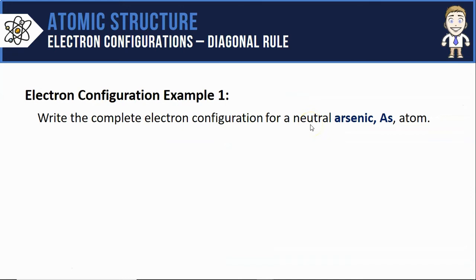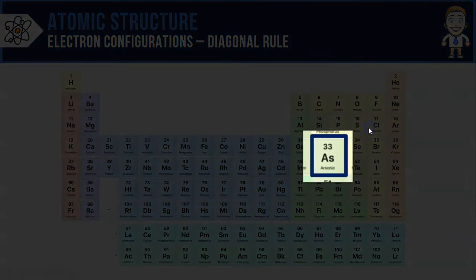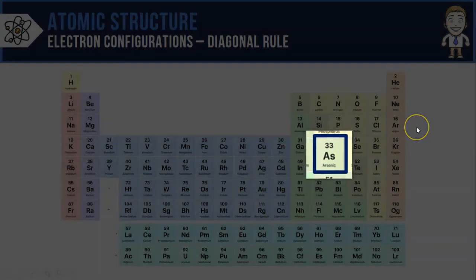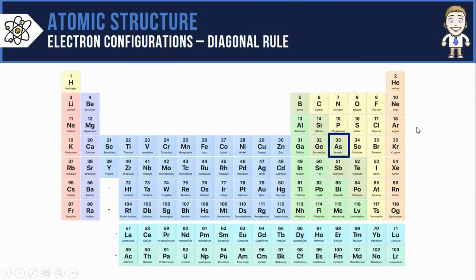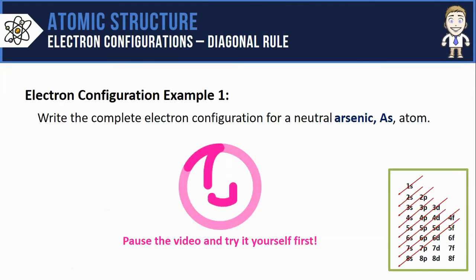Let's take a minute and close out the video by practicing using the diagonal rule and writing the electron configuration for a neutral arsenic atom. Arsenic is right here on the periodic table. It's got 33 protons, so if it's neutral, it also has 33 electrons. It's a great idea to pause the video and try this yourself first before watching me.